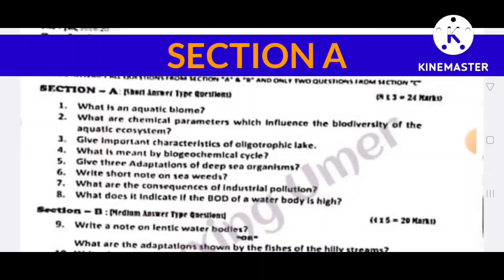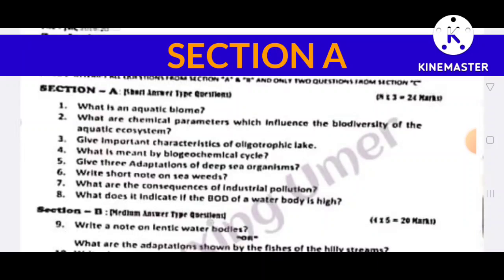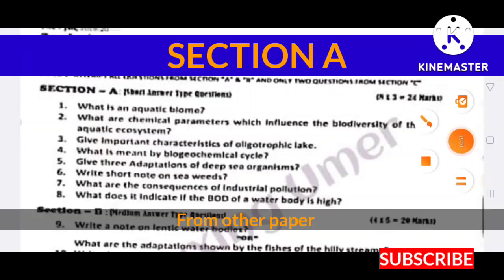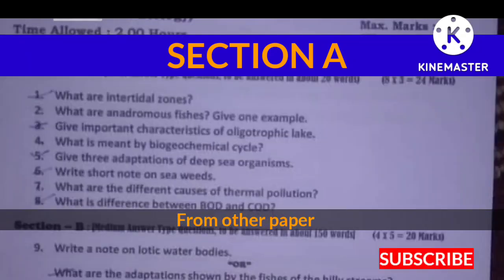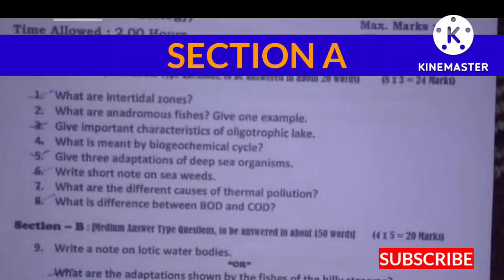Question number six — write a short note on seaweeds. Question number seven — what are the consequences of industrial pollution? Question number eight — what does it indicate if the BOD of a water body is high? Further short answer questions: what are intertidal zones? What are the anadromous fishes — give one example.